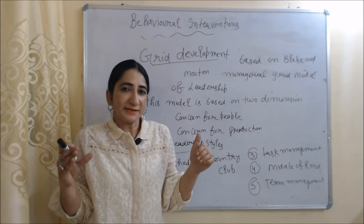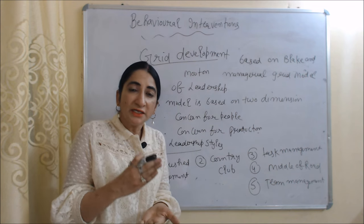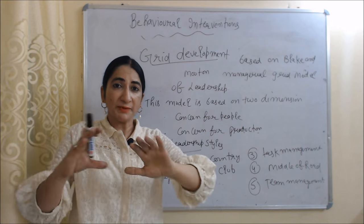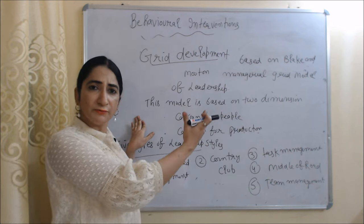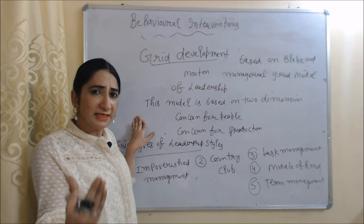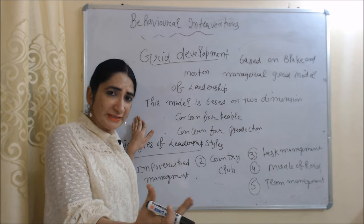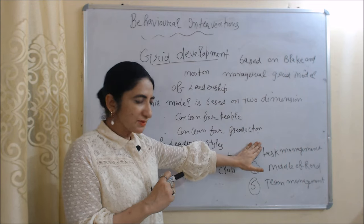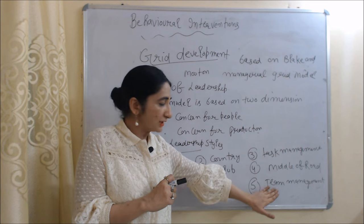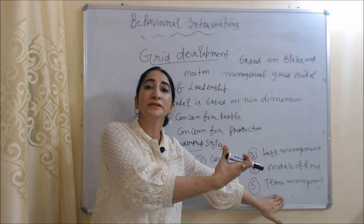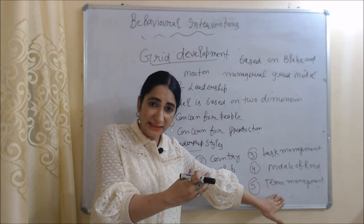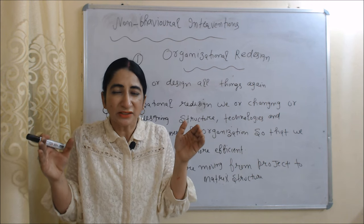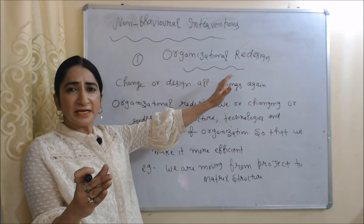The next behavioral intervention is grid development, which is based on Blake and Mouton's famous leadership model called the Managerial Grid Model. This model is based on two dimensions: concern for people and concern for production, and it identifies five types of leadership style: impoverished management, country club, task management, middle of the road, and team management. According to this model, team management is the best leadership style because it shows high concern for both production and employees.